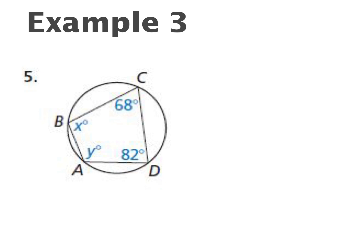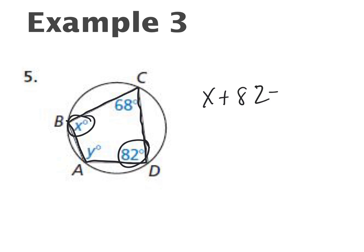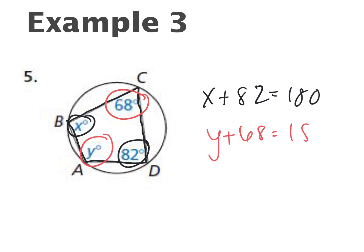One more example: find x and y in this inscribed quadrilateral. The opposite angles must be supplementary. X plus 82 must equal 180, so X equals 98. Y plus 68 must equal 180, so Y equals 112.